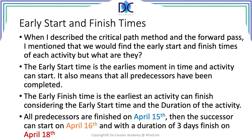Let's look at a simple calculation. Let's say for the activity all predecessors are finished on April 15th — in the evening we stop work — so the successor can start earliest on April 16th. With a duration of three days it will finish on April 18th. Note that 16 plus 3 equals 19, but counting the days: April 16th is day one, April 17th is day two, April 18th is day three. So the formula is: early finish = early start + duration − 1, i.e., 16 + 3 − 1 = 18.